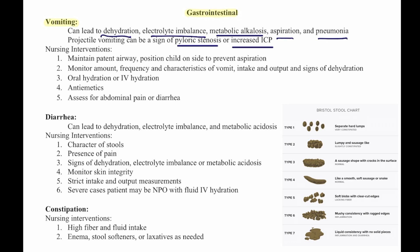Our nursing interventions are always our ABCs: maintain a patent airway, position the child on their side to prevent aspiration, monitor the amount, frequency, and characteristics of the vomit, intake and output, and any signs of dehydration. Provide oral hydration or IV hydration, antiemetics, and assess for abdominal pain or diarrhea.